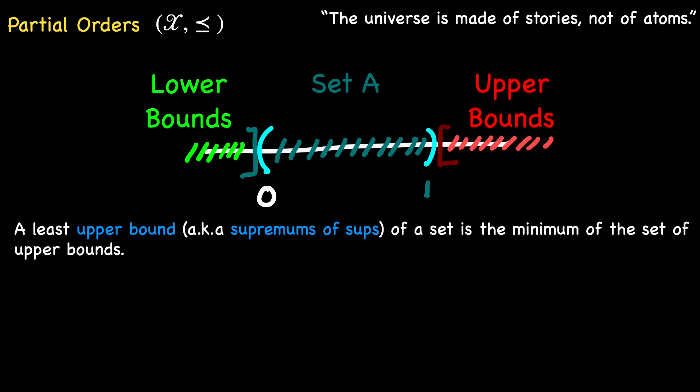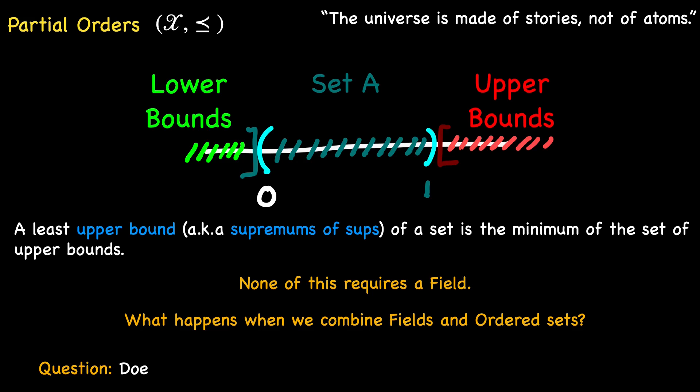These are alternatively known as supremums or sups, and infimums or infs. Does every upper bounded set of rationals have a supremum? Pause the video, reflect on this for a moment, and share your thoughts with us.